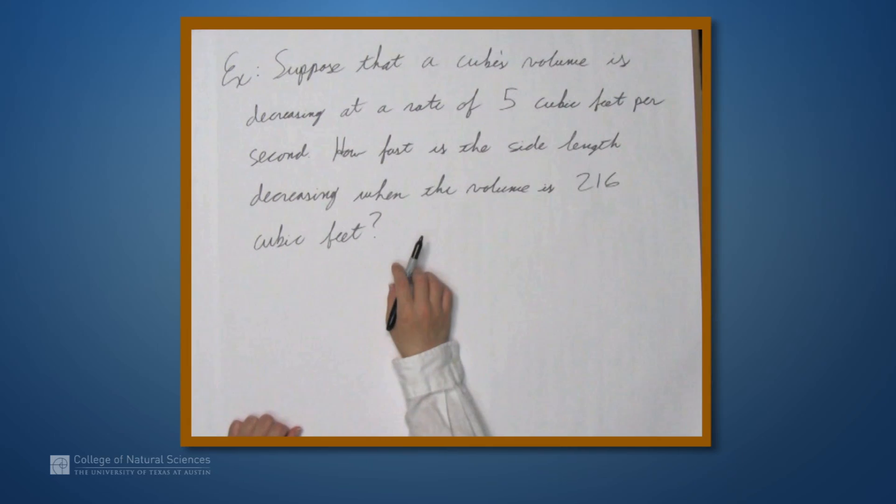Let's now suppose that a cube's volume is decreasing at a rate of 5 cubic feet per second. How fast is the side length decreasing when the volume is 216 cubic feet?